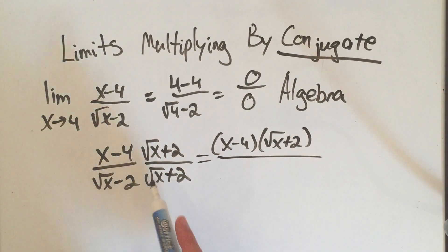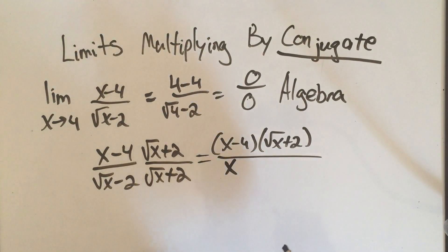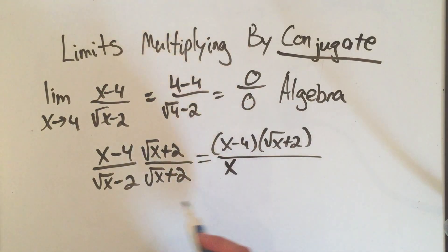I'll get square root of x times square root of x is x. I'll get a plus root x, I'll get a plus 2 root x, a minus 2 root x, and they'll cancel. And I'll get minus 2 times plus 2 is minus 4. And look at that. x minus 4 over x minus 4 cancel.